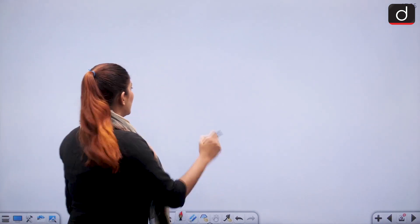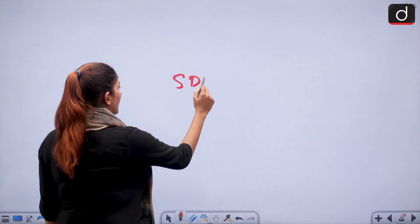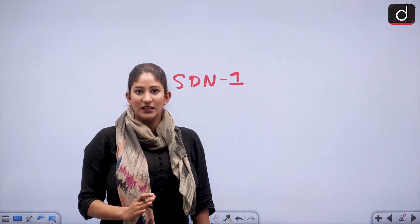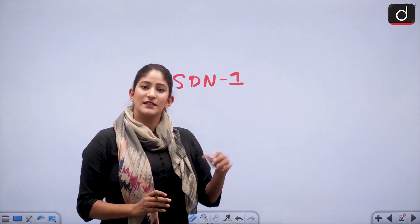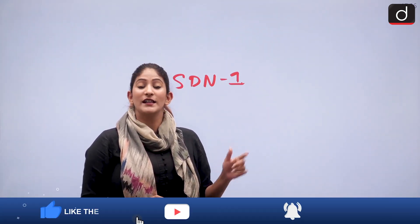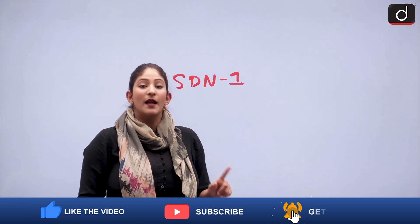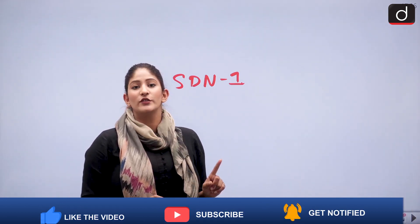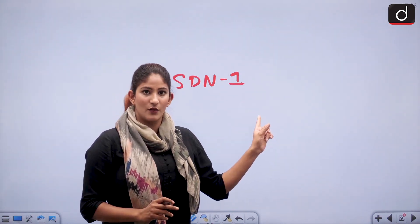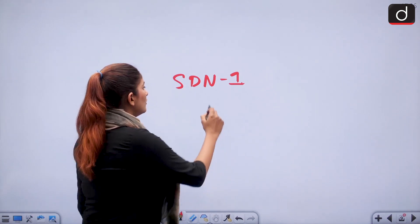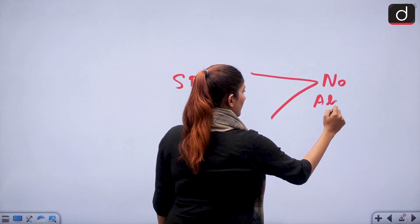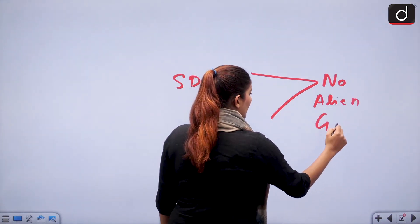In SDN1, the gene is either inserted with a modified nuclease or it is deleted. There is no introduction of any foreign or alien gene in SDN1 — no foreign gene, no alien gene.